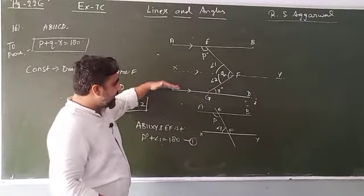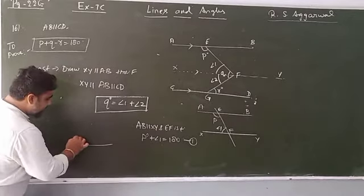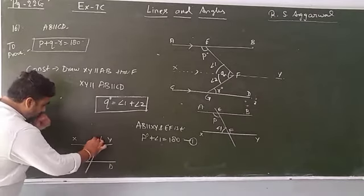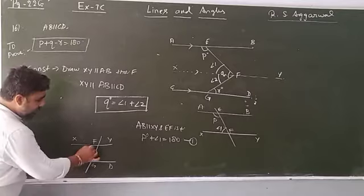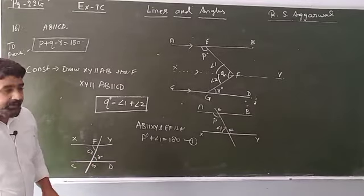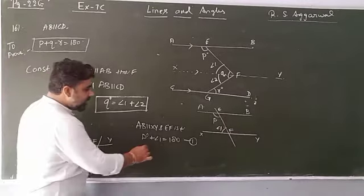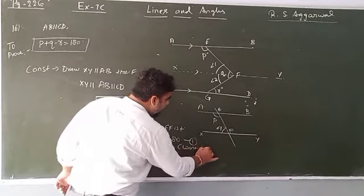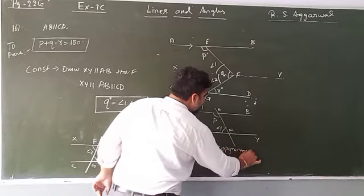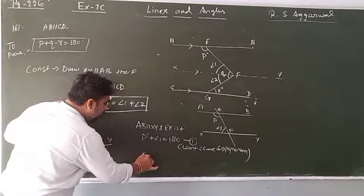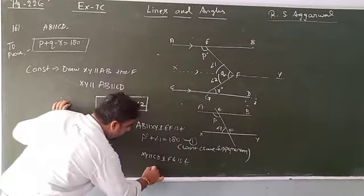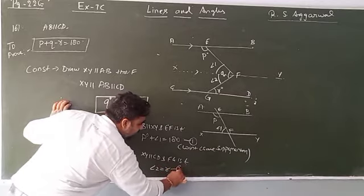Now looking at the lower two lines: XY and CD are parallel, and FG is the transversal. Angle 2 and angle r are alternate interior angles, so angle 2 equals angle r. This is equation number 2.